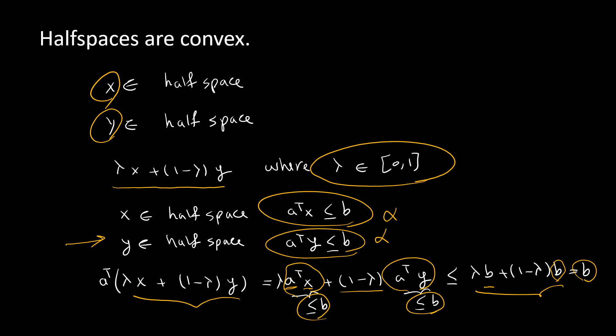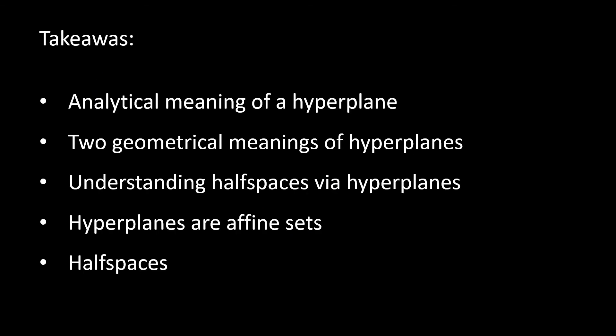So what are the takeaways? We learned three different ways of thinking about a hyperplane: one analytical way and two geometrical ones. We also learned that hyperplanes are affine sets. Finally, half spaces are associated with hyperplanes — hyperplanes are convex sets, but half spaces are not affine. Thank you for watching! You can support me by liking and giving a thumbs up. Please subscribe for notifications on new videos, and share with anyone who might find them useful. Have a great day!